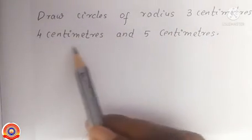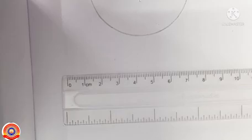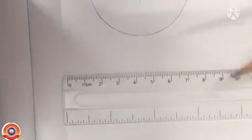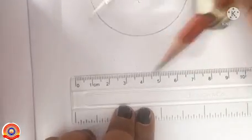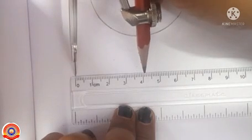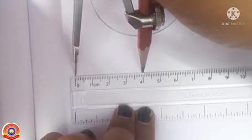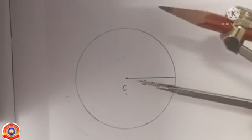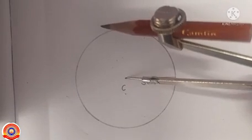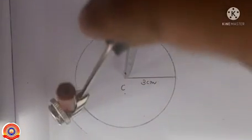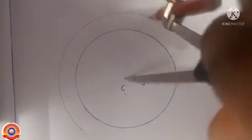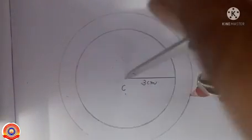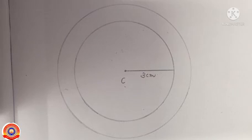Next, we have to draw a circle of radius four centimeters. Take the ruler and compass, then take the measure of four centimeters in the compass. The distance between the pointed end of the compass and the tip of the pencil should be four centimeters. Fix the pointed end of the compass at the same center and then turn the compass around.